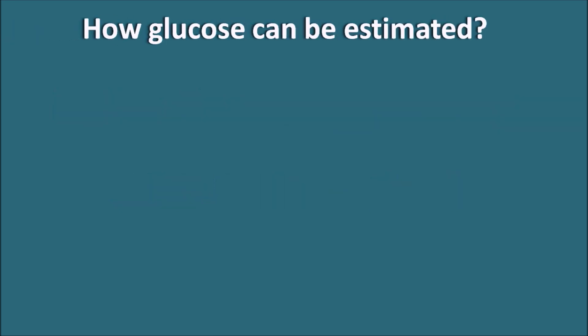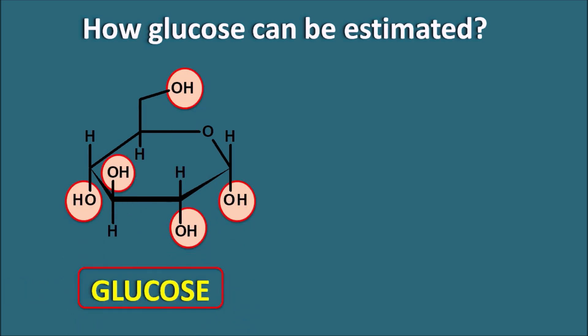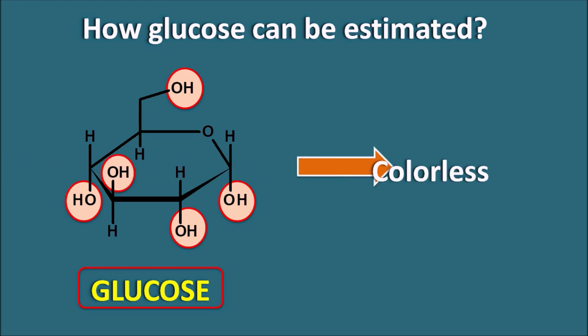How can glucose be estimated? This is the structure of glucose. Glucose is a polyhydroxy compound — you can observe that five hydroxyl groups are present and one oxygen is present in ether form. So glucose does not have any pi bonds, it cannot act as a chromophore, it cannot absorb visible radiation, and therefore glucose is a colorless compound.